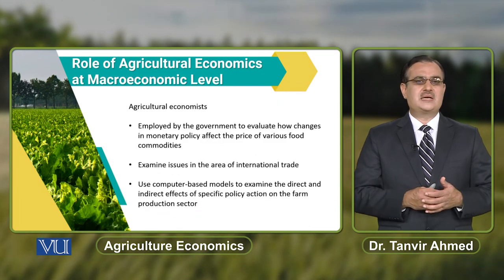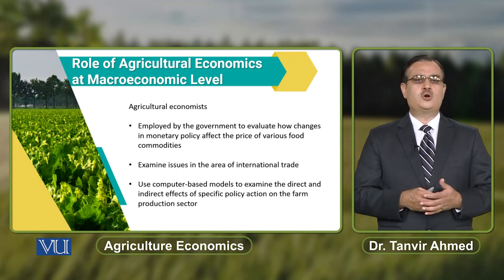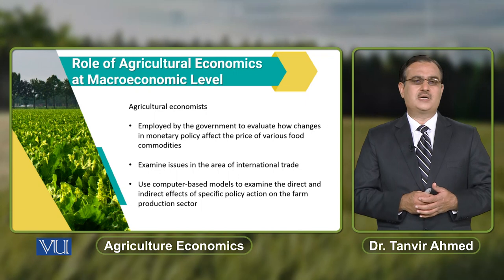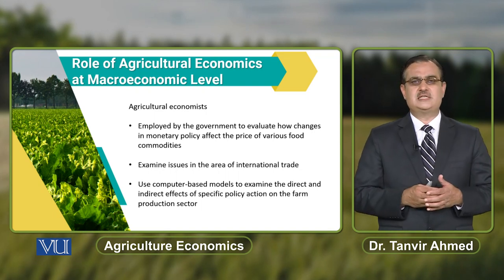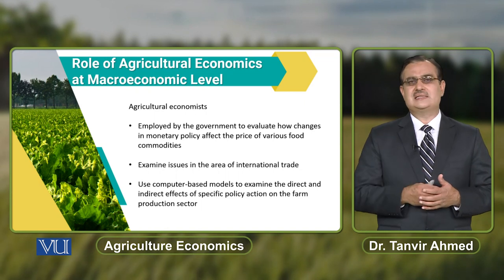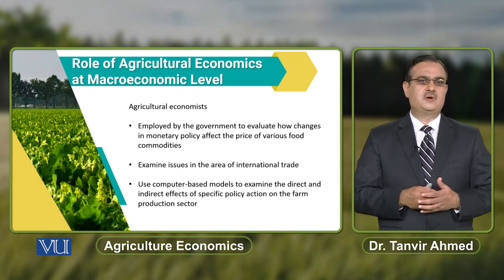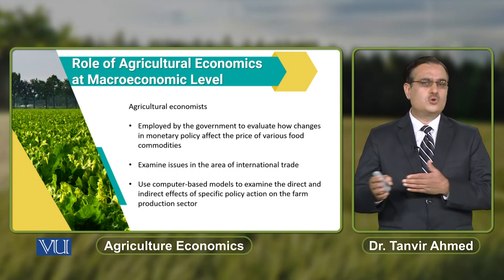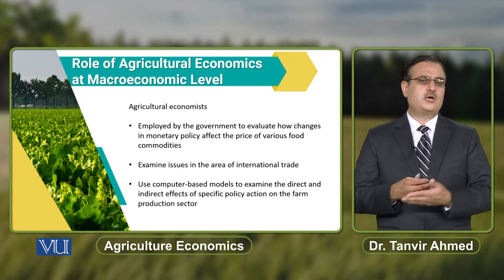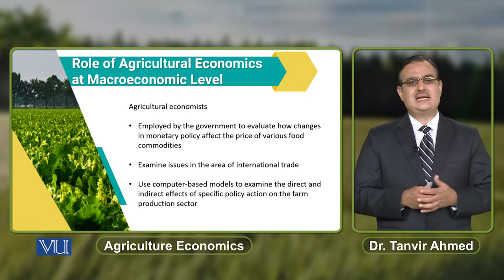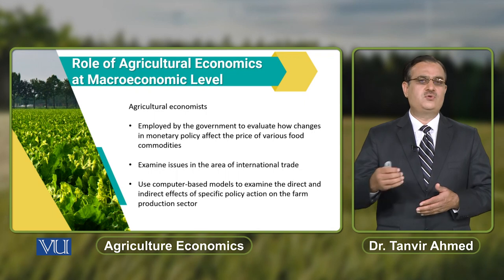Ab jab aap agricultural economist ki baat karo ge, these agricultural economists are basically employed by the government to evaluate how changes in monetary policy affect the prices of various food commodities. Jab aap baat karte ho monetary policy ki — if there is a change in monetary policy, kis form mein? Because of increase in the interest rate. If there is increase in interest rate, there is some influence on the prices of food commodities. Because of increase in interest rate, there is less usage of inputs required to produce output, and ultimately there is a decrease in agricultural output, which increases the prices of food commodities in the market.